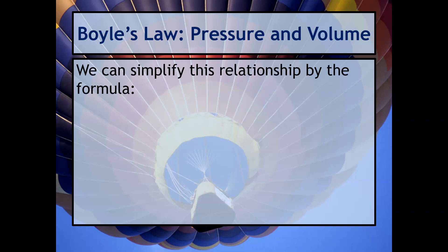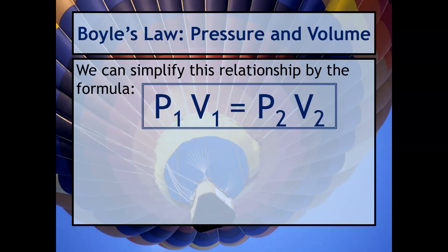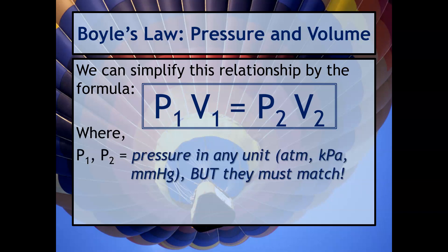So if you guessed an indirect or inverse relationship, you would be right. Let's talk about the formula. We can simplify the relationship by using P1V1 equals P2V2, where you have P1 and P2 representing pressure in any unit. The one is your initial condition of the gas and the twos are your final condition of the gas.